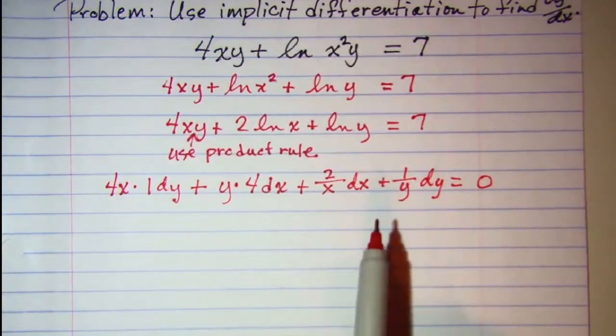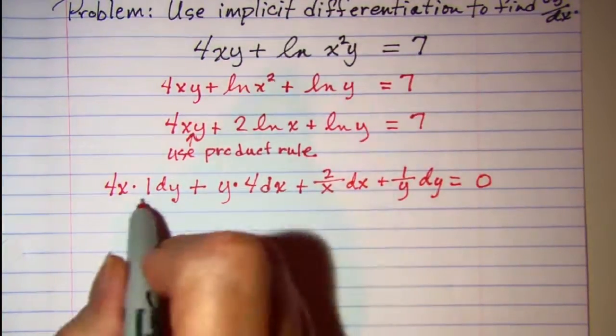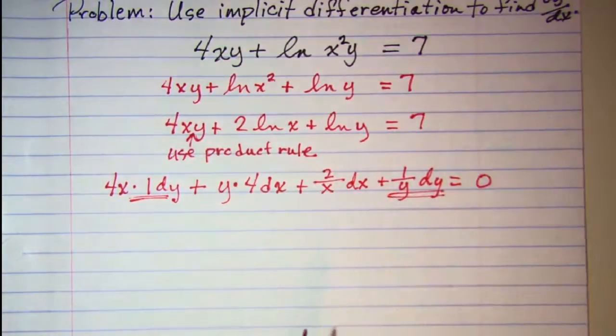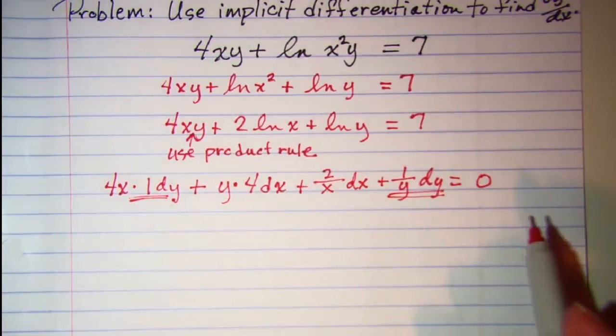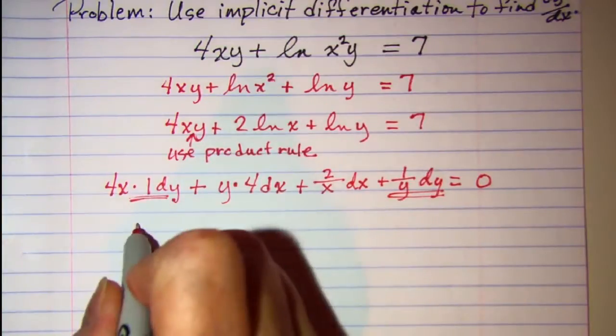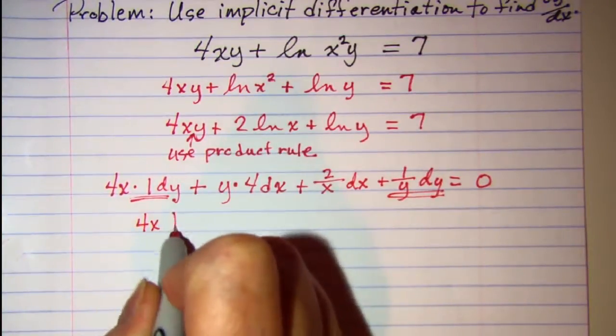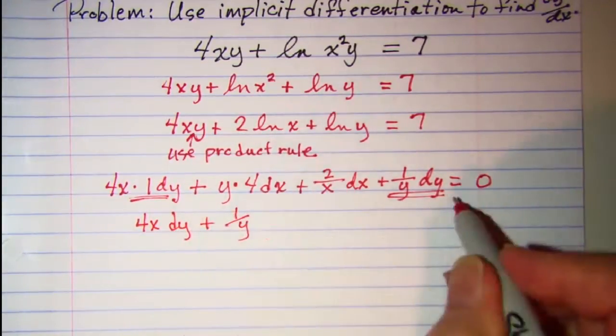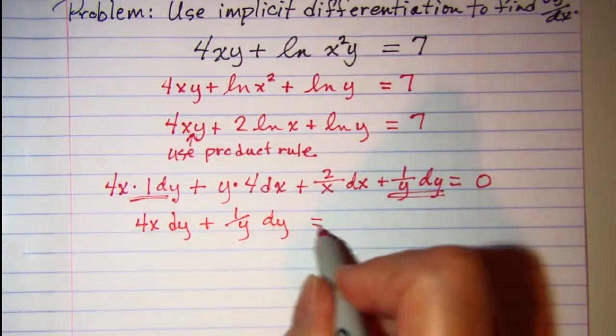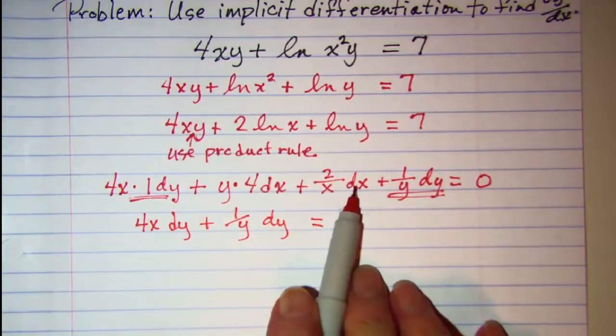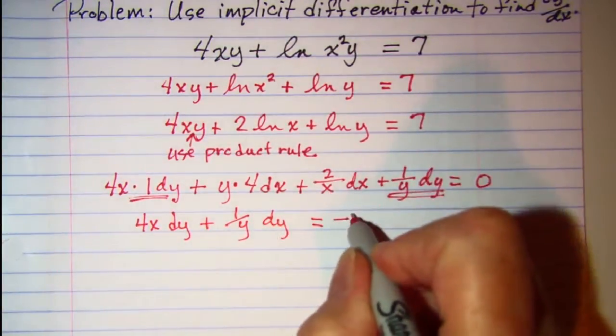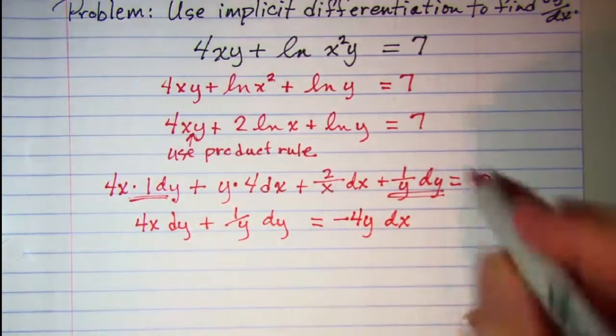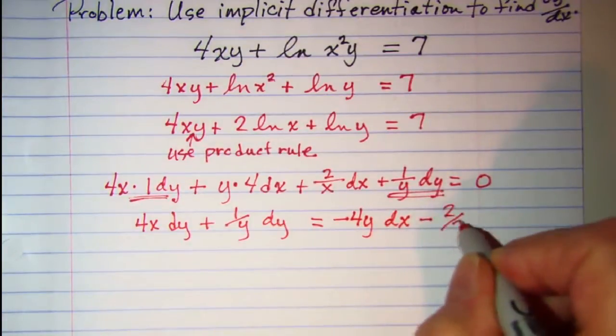Now we're asked to find dy/dx. So let me get all my dy terms, we'll put those on the left, and the dx terms we'll put on the right side. So this one is 4x dy and then plus 1 over y dy. And then my other two terms I'll put over on the right side. So this is negative 4y dx and then minus 2 over x dx.